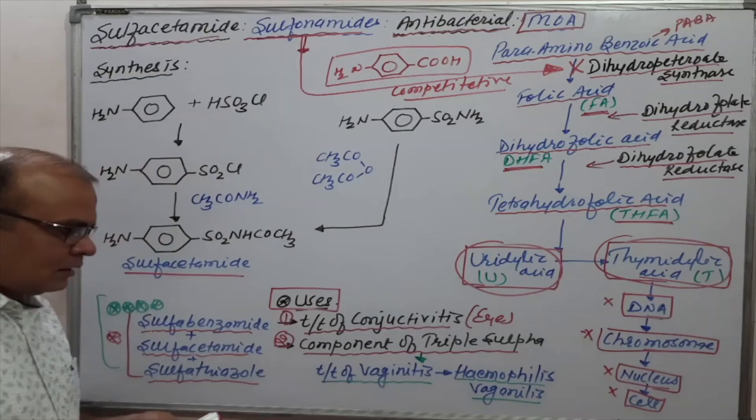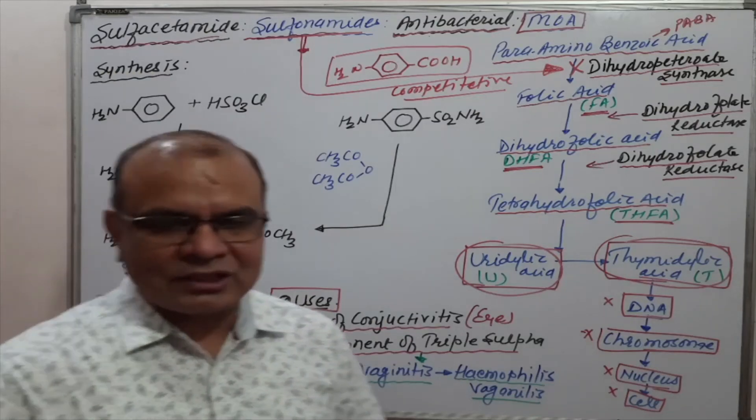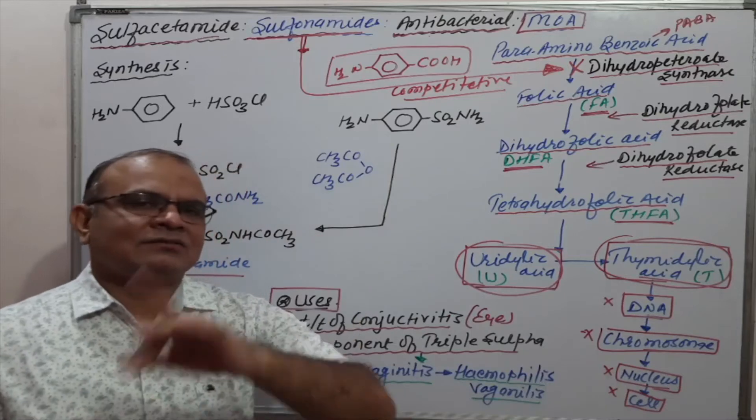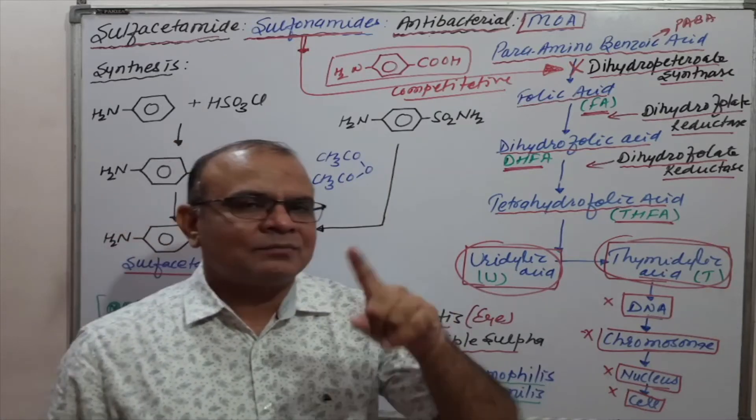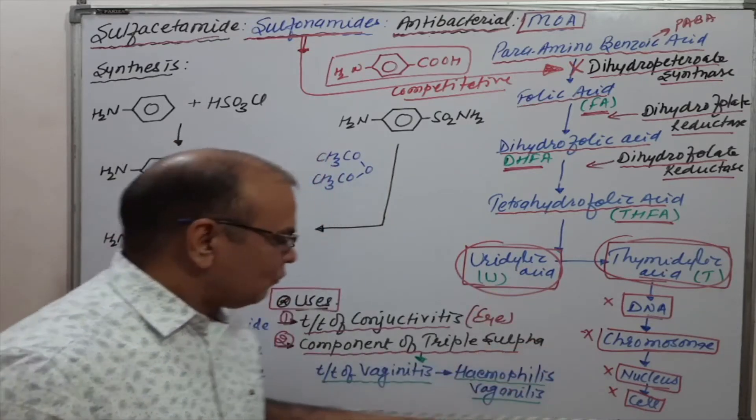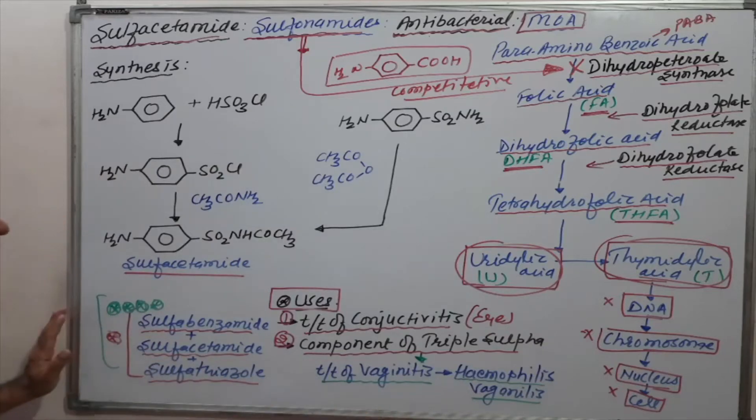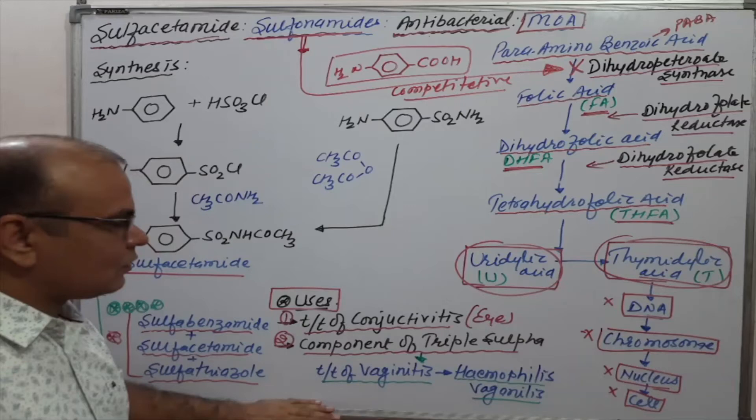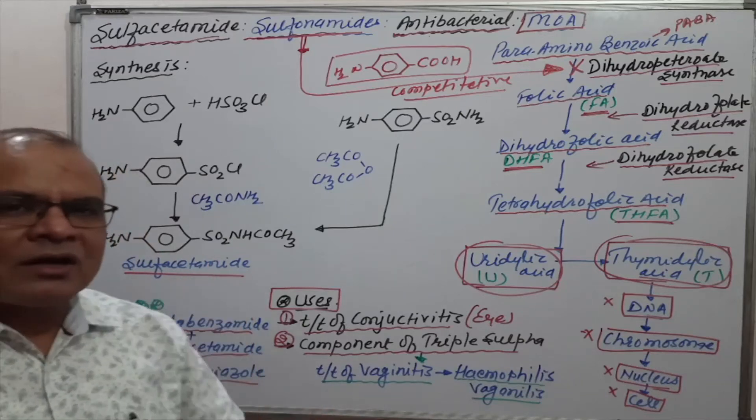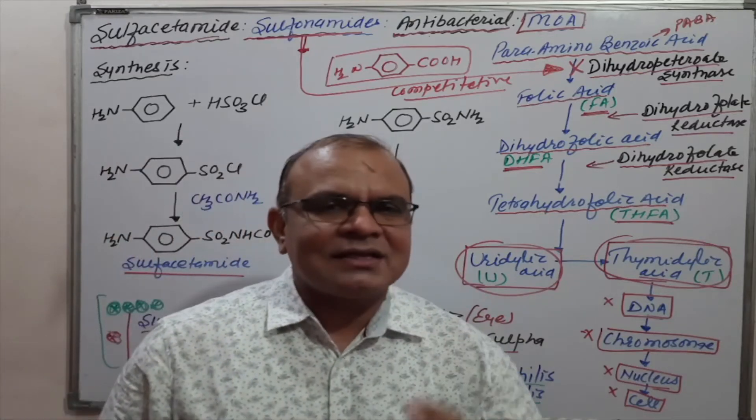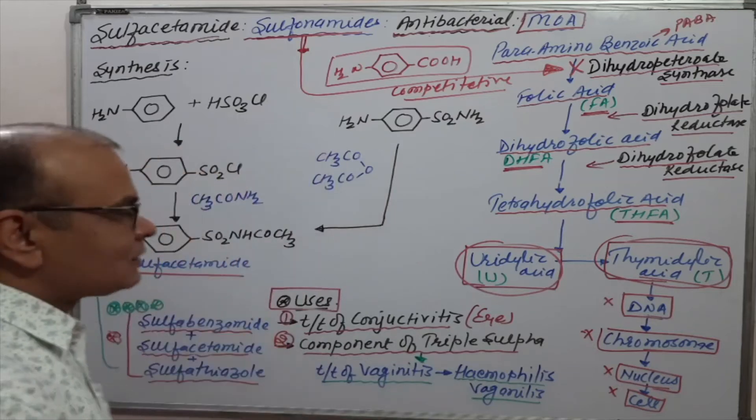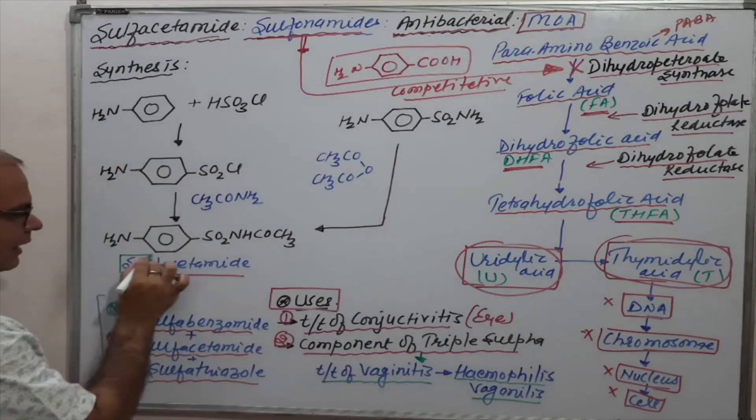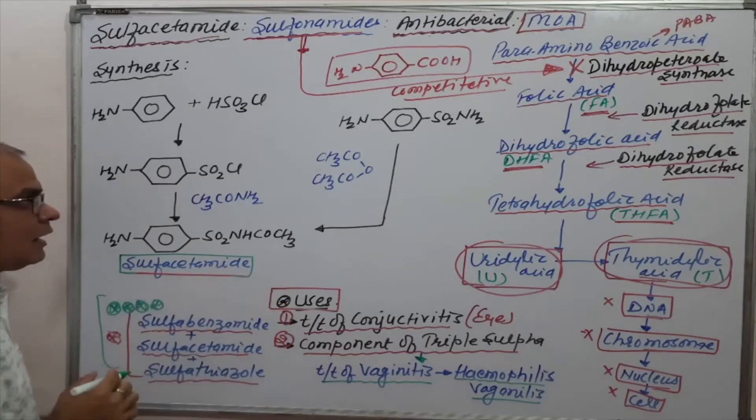Triple sulfa is used for the treatment of vaginitis caused by bacteria Haemophilus vaginitis. These two uses of sulfacetamide are: treatment of conjunctivitis and as a component of triple sulfa for vaginitis. Now come to the synthesis of sulfacetamide.